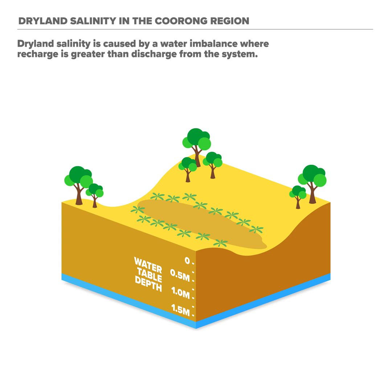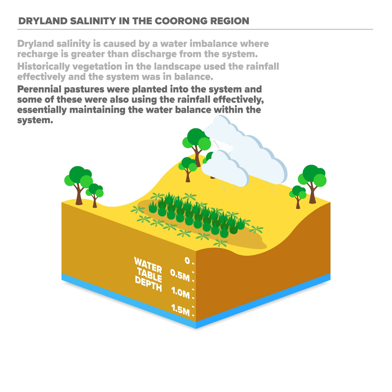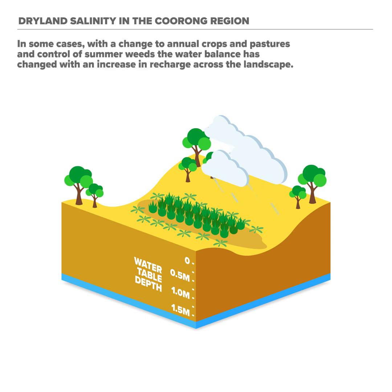Dryland salinity is caused by a water imbalance where recharge is greater than discharge from the system. Historically, vegetation in the landscape used the rainfall effectively and the system was in balance. Perennial pastures were planted into the system and some of these were also using the rainfall effectively, essentially maintaining the water balance. In some cases, with the change to annual crops and pastures and control of summer weeds, the water balance has changed with an increase in recharge across the landscape.